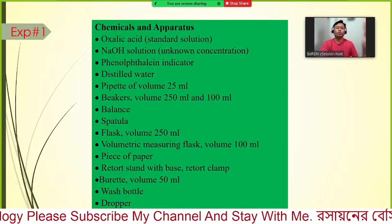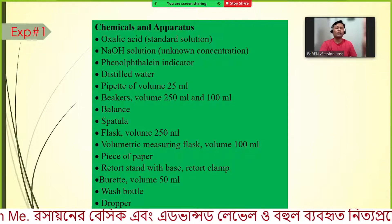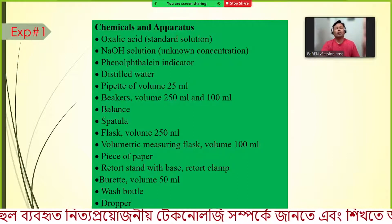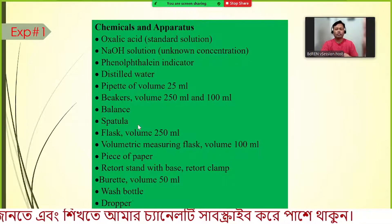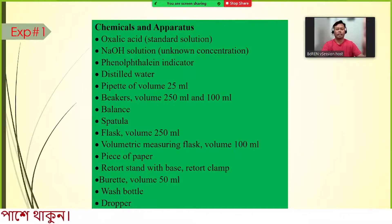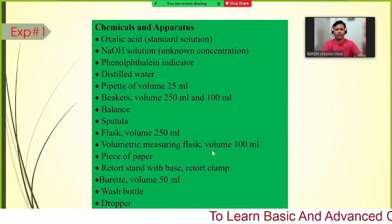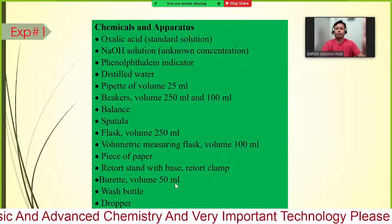A four-decimal-place balance allows measurement down to one milligram. We also need a spatula — similar to a spoon — to handle solid chemicals without touching them with bare hands. Other items include a conical flask of 250 mL, a volumetric flask of 100 mL, a piece of paper, a retort stand with base and clamp, a 50 mL burette, a wash bottle, and a dropper.